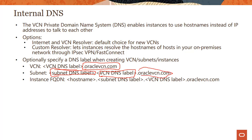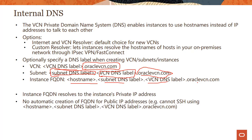For a host, the fully qualified domain name follows the pattern: hostname.subnetname.vcnname.oraclevcn.com — which seems pretty logical. The instance fully qualified domain name resolves to the instance's private IP address. In previous examples, we had a local peering gateway and were pinging instances using their private IP addresses. Instead of using the private IP address, we could have used the instance fully qualified domain names to ping those instances.